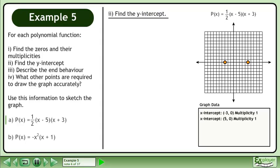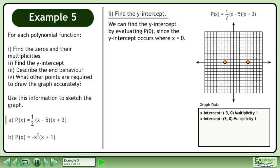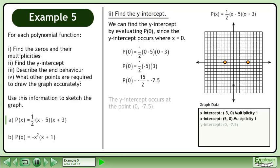Next we'll find the y-intercept. We can find the y-intercept by evaluating p at 0, since the y-intercept occurs where x equals 0. Replace the function input with 0 and evaluate — the result is negative 7.5. The y-intercept occurs at the point (0, negative 7.5).